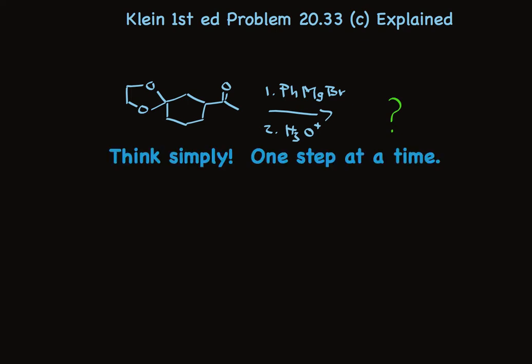So let me rewrite this where we look at the individual steps sequentially. First, we'll look at the product that's formed when phenylmagnesium bromide reacts with this ketone. And secondly, we'll see what happens when that initial product is treated with aqueous acid.